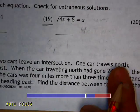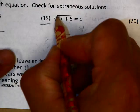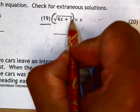Here we go with problem number 19. We have a square root right here, so we will square both sides.